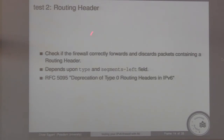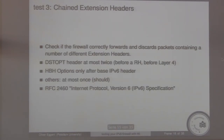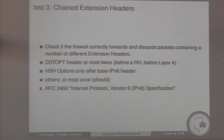The second test is the routing header test. We wanted to check if the firewall can forward or discard packets containing a routing header, which depends upon the type and the segments left field inside the header. Test three is chained extension headers — because you can chain multiple extension headers one after another, we wanted to see how the firewall handles that. The destination options header should occur at most twice, the hop-by-hop options header only once after the base IPv6 header, and all others at most once.